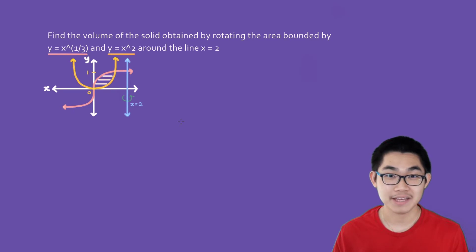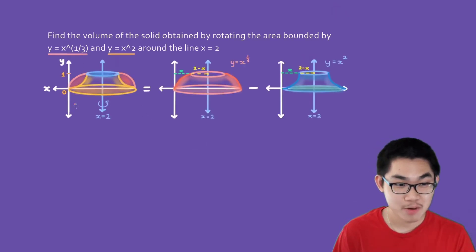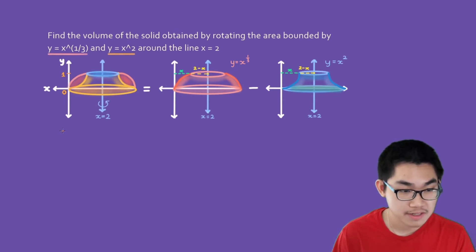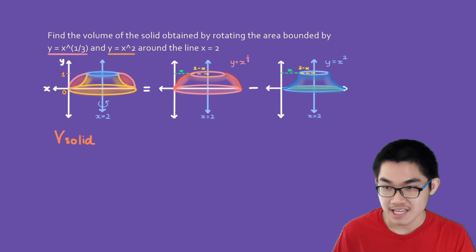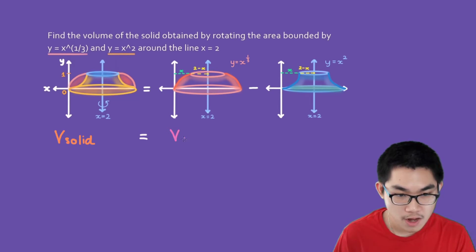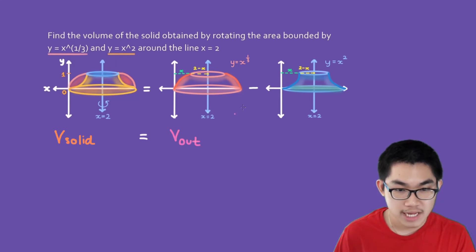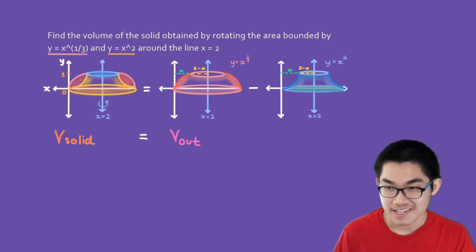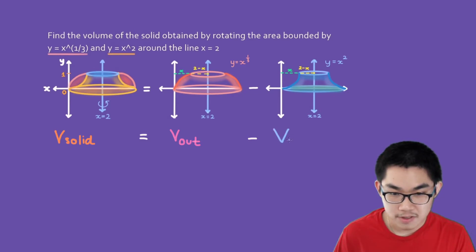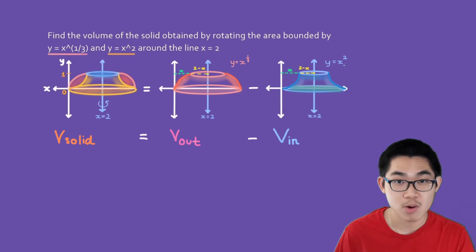Well, we're going to get something like this. So this is our three-dimensional object, and we want to find the volume of this object. The volume of this solid is equal to the volume of the outside function — so the outside function is y equals x to the power of 1/3 — and we don't forget to minus the volume of the inner function, where the inner function is y equals x squared.